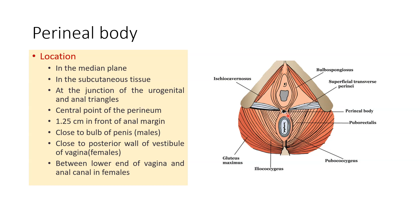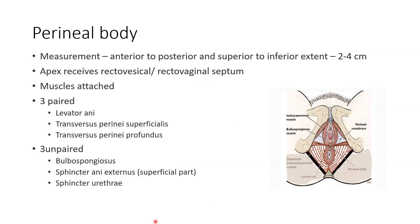You are also seeing parts of the pelvic diaphragm — the puborectalis, the pubococcygeus, and the iliococcygeus — the three components of the levator ani muscle — and their relation to the perineal body. Now, what are the measurements of the perineal body?